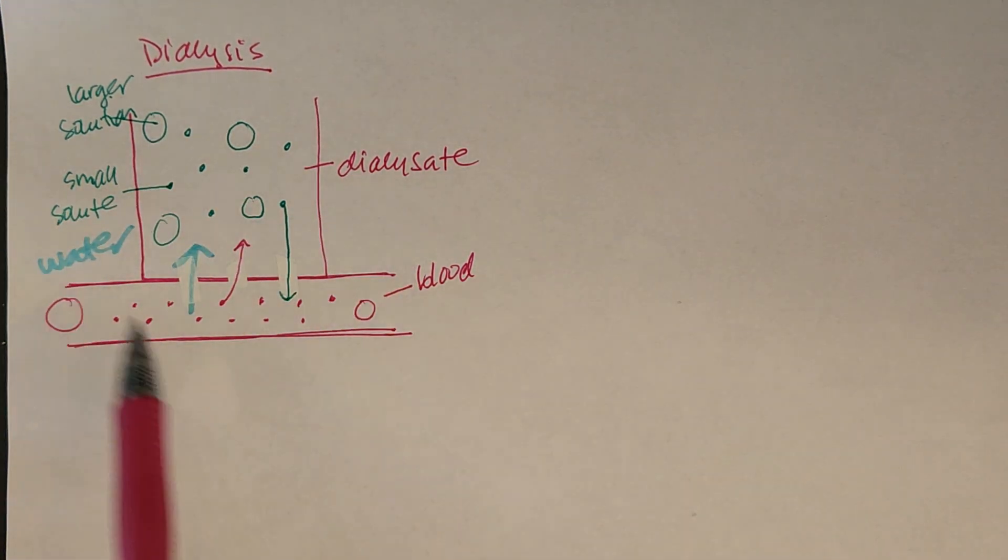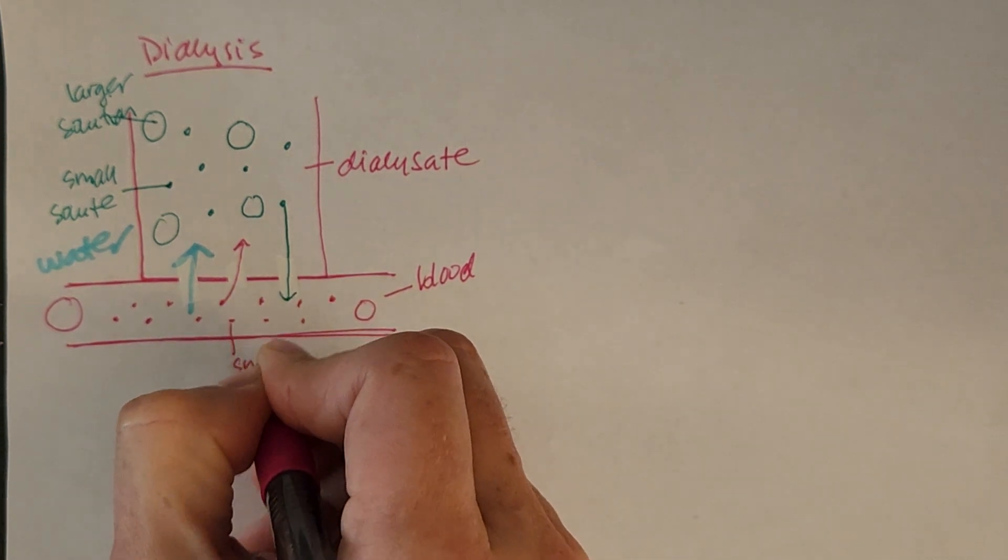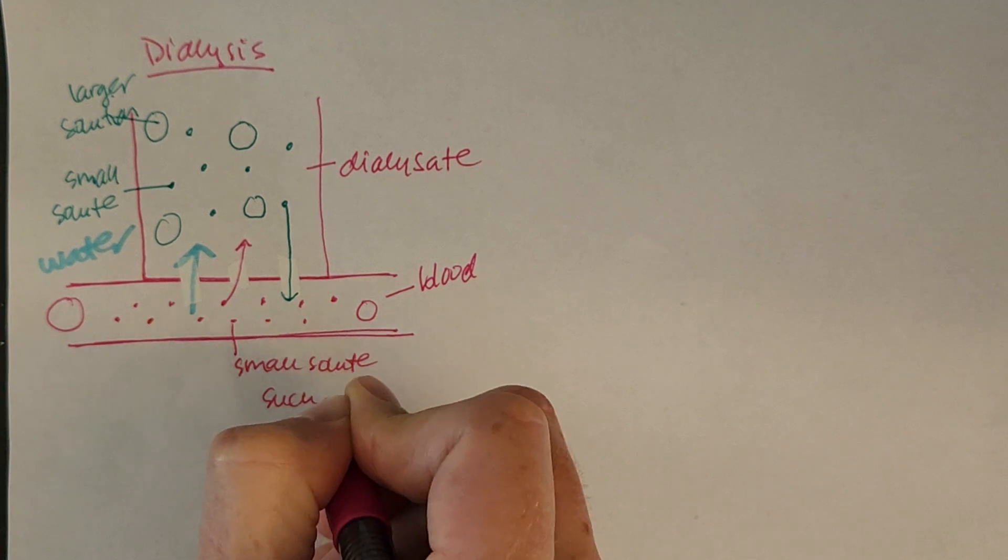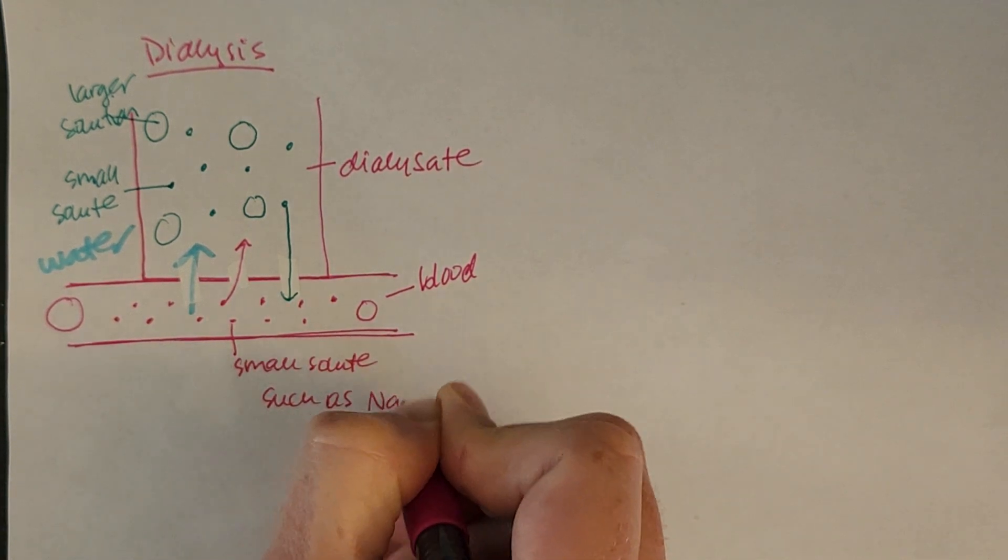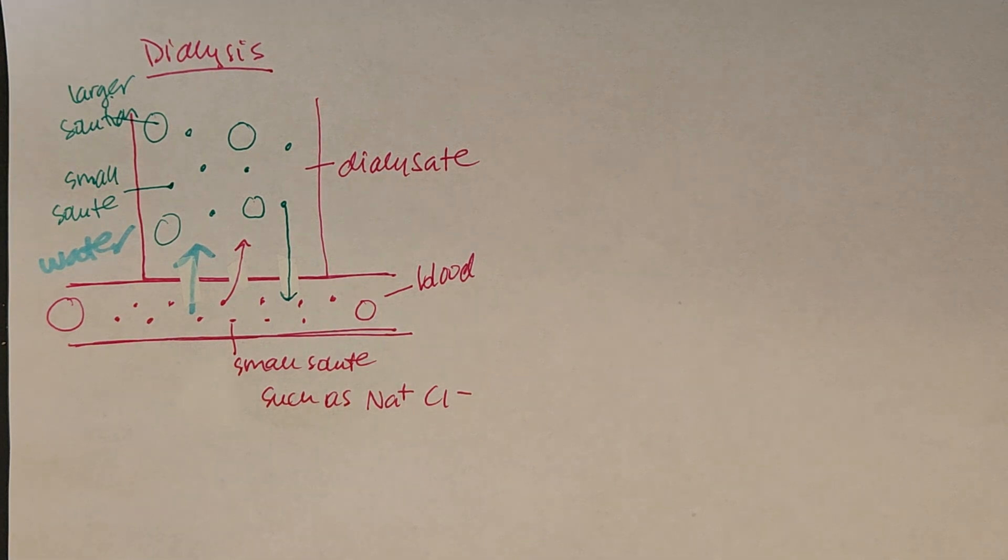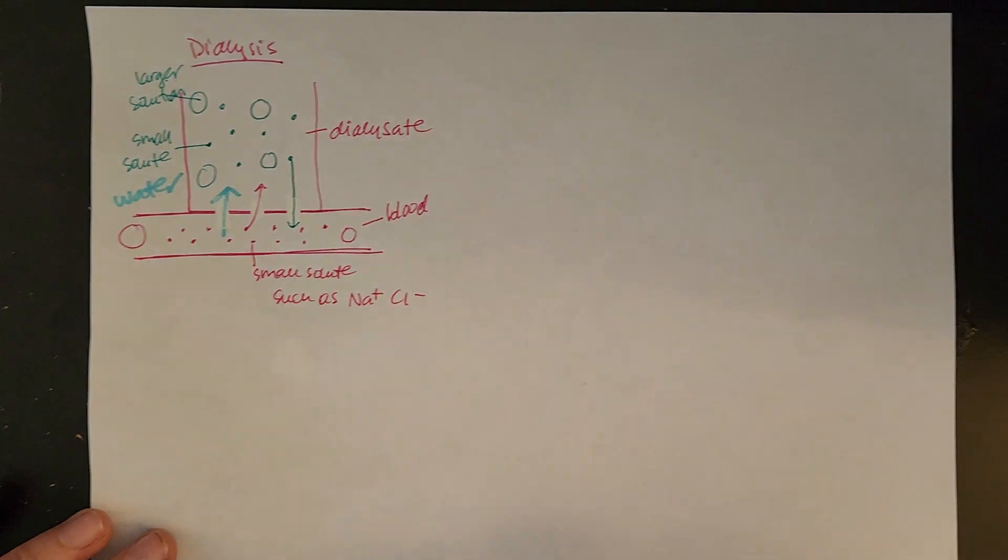So a lot of things going on here. Some of these small solutes might be things like, so such as Na plus or Cl minus. And so those are small enough to move across the membrane. All right? So we're going to take this complex situation and, like a good scientist, eliminate some of the variables and look at just one or two at a time.